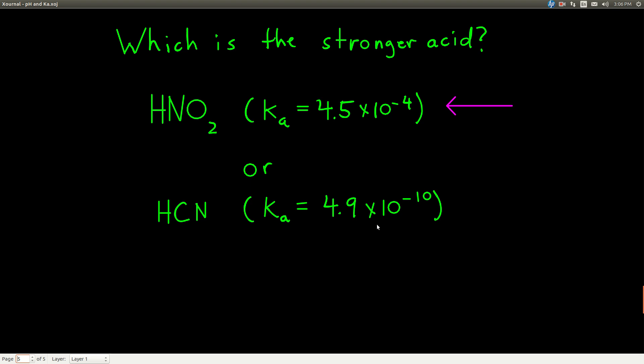Now, hydrocyanic acid, its Ka is 4.9 times 10 to the minus 10th. Well, which is a stronger acid? Nitrous acid is, because 4.5 times 10 to the minus 4th is a bigger number than 4.9 times 10 to the minus 10th.